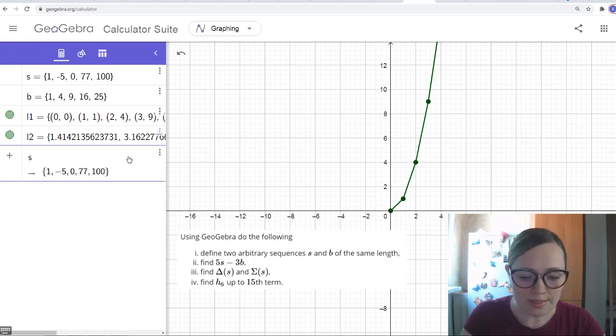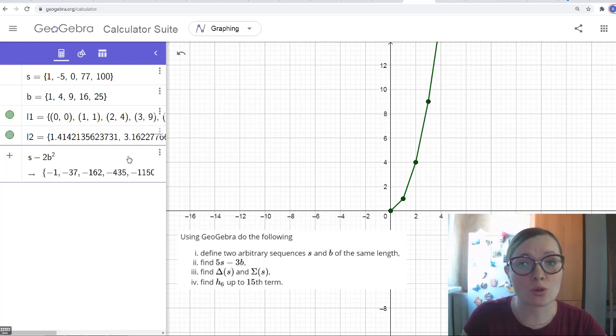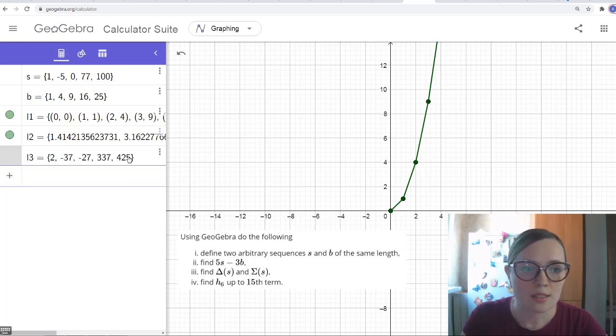For example, you can sum them, you can take difference, you can multiply them by numbers, you can even take powers, which means that each term is squared in this case. You can even take functions like sine and cosine. This is fine in GeoGebra. And here we need to find 5s minus 3b. So this is this sequence. GeoGebra called it L3.